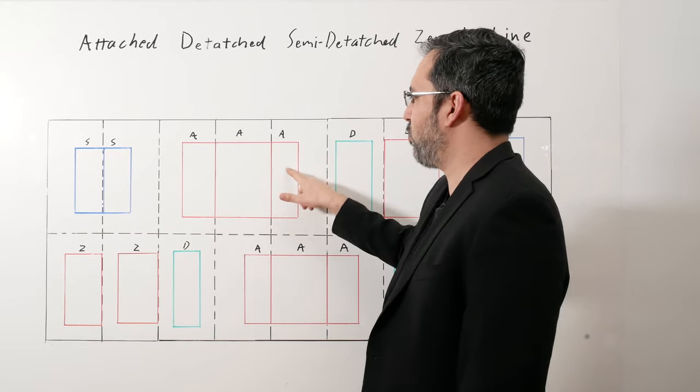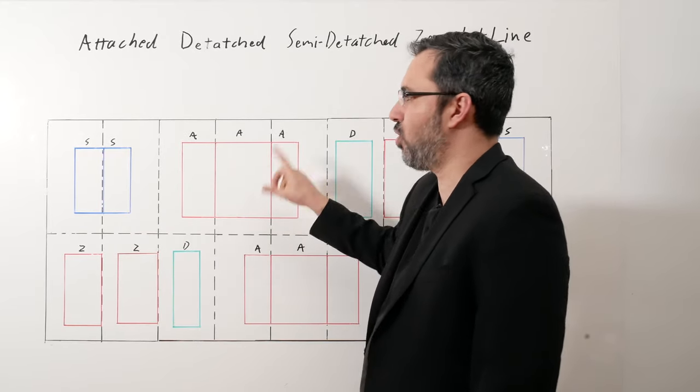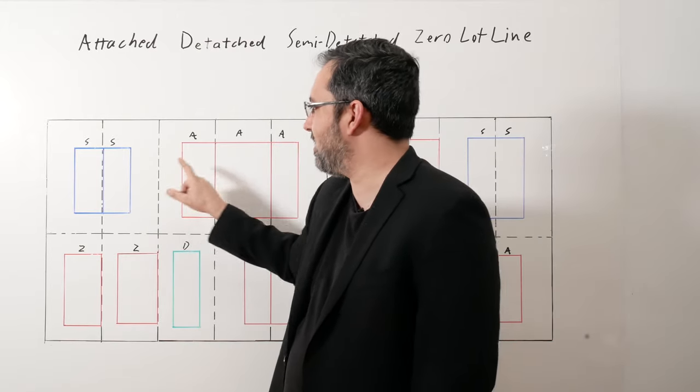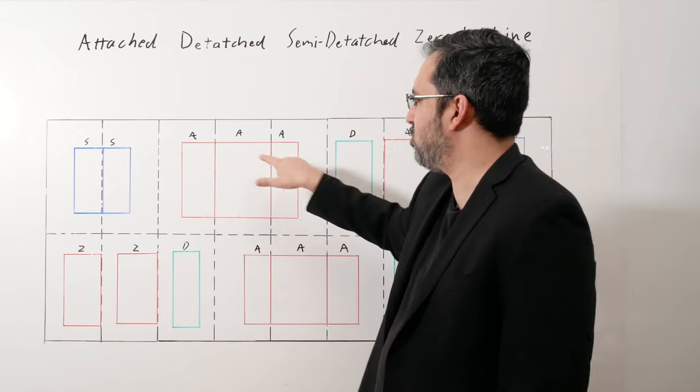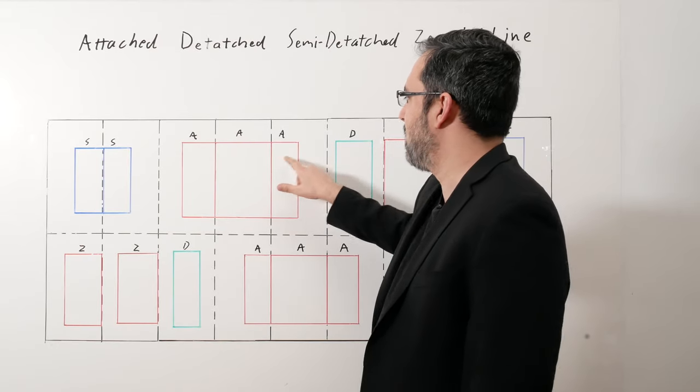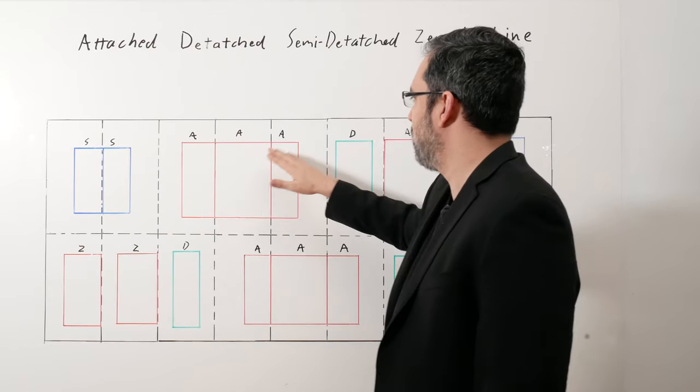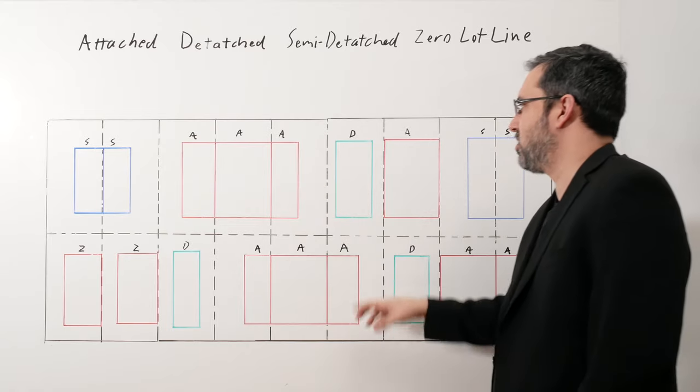Attached is a group of three or more. If it's a group of three or more, it's always attached. The one at the end is not a semi-detached. That's a misconception. So the one in the middle, it touches two property lines—it's definitely attached. And then this is attached as a group. So these three are all attached.